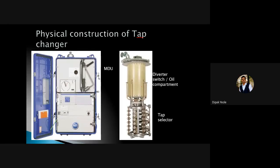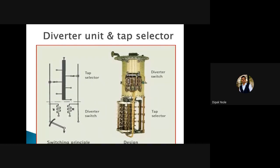This is the picture which we have seen last time, and this is the important switching principle of the on-load tap changer. It consists of two parts: the tap selector is available, and the arrow is available here, and we have to select according to our application. And this is called the diverter switch. This is the fixed part and this is the moving part, so this moving part will move in such a way that it will touch the current limiting resistors. This function which you have seen is the model or design of this particular on-load tap changer.